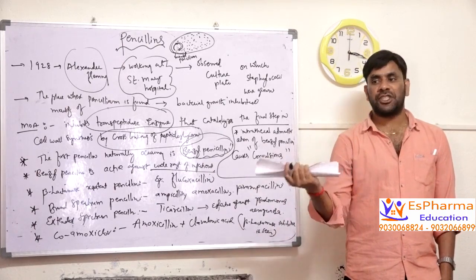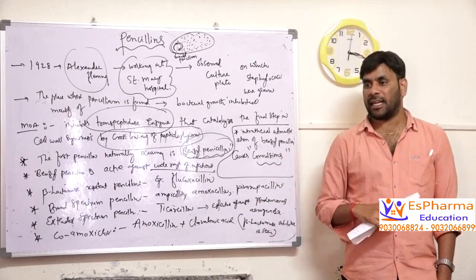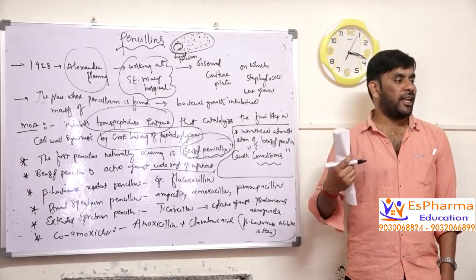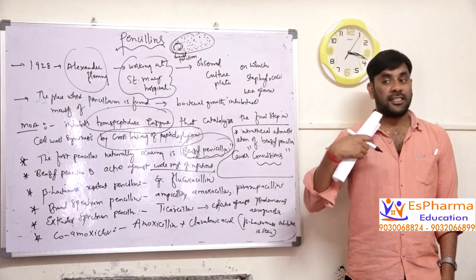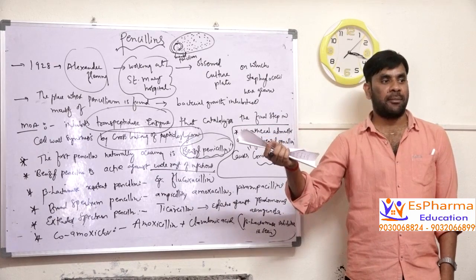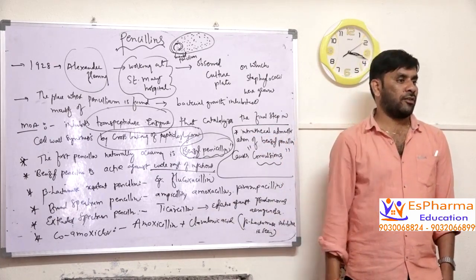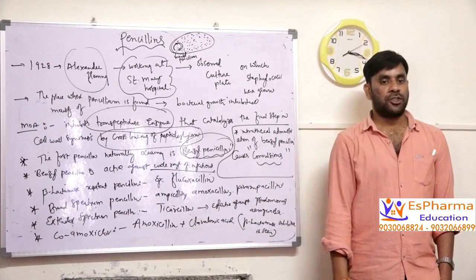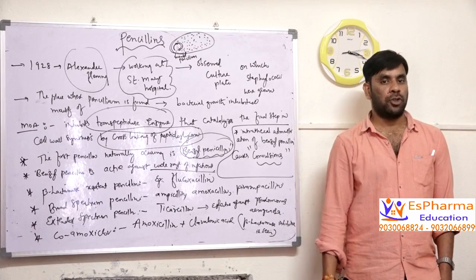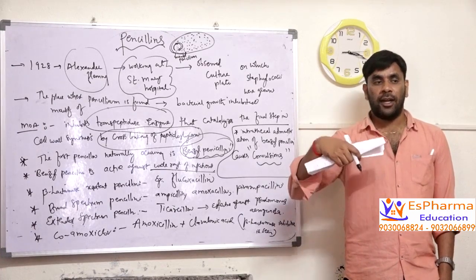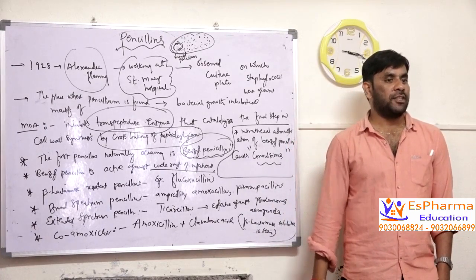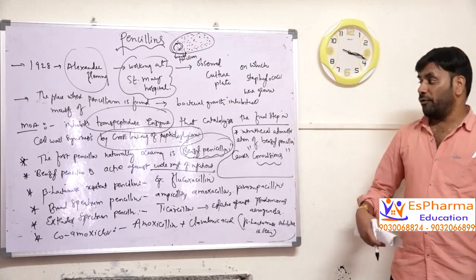Penicillin contains the beta-lactam ring. When penicillin is given, the bacteria becomes clever and synthesizes one enzyme called beta-lactamase, which degrades the structure of the penicillin. Beta-lactamase is the enzyme produced by bacteria to break down the beta-lactam ring present in penicillin.